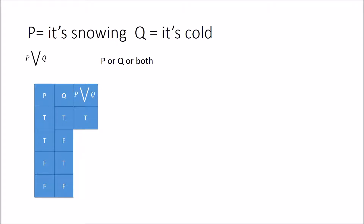We only need one of them to work in order for this to be valid. But the last row fails because neither is happening. So the only circumstance in which this simple proposition doesn't hold up is when both are false.